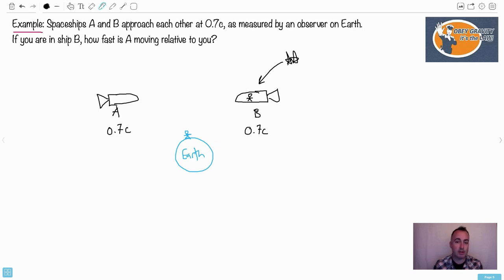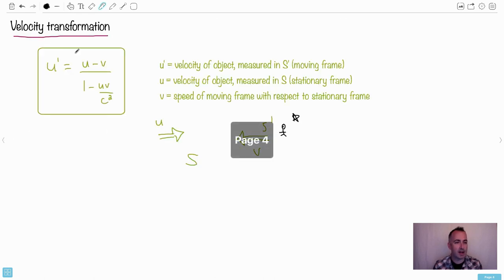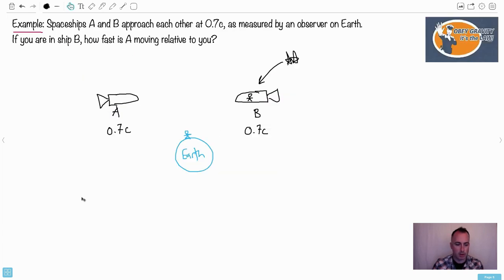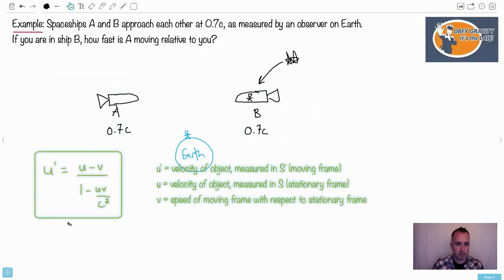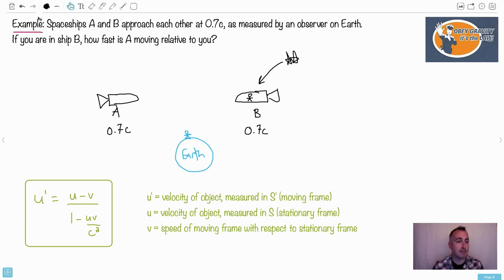So in this case then, if you are in ship B, this is the important thing. This is what we're considering here. You're in ship B, how fast is A moving relative to you? In other words, how fast will you think spaceship A is coming towards you? Obviously, we know this speed. On Earth, they see this spaceship B, which is where you're sitting, is going at 0.7C compared to the Earth as measured by the Earth. But so is A. So let's look carefully at the letters here and how we should define them.